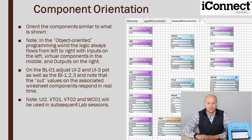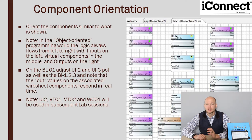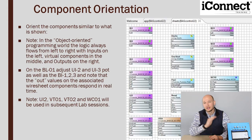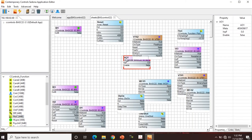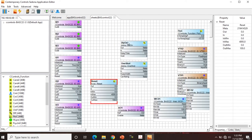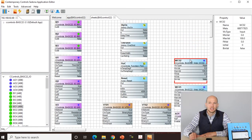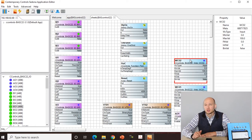Now we want to orient the components in a similar configuration to what's shown on screen. One thing to note: in the object-oriented programming world, logic always flows from left to right — with inputs on the left, virtual components in the middle, and outputs on the right. I've oriented my wire sheet to how I want it, and I just noticed that I don't have binary output 1, 2, and 3, so I'm going to add those now.